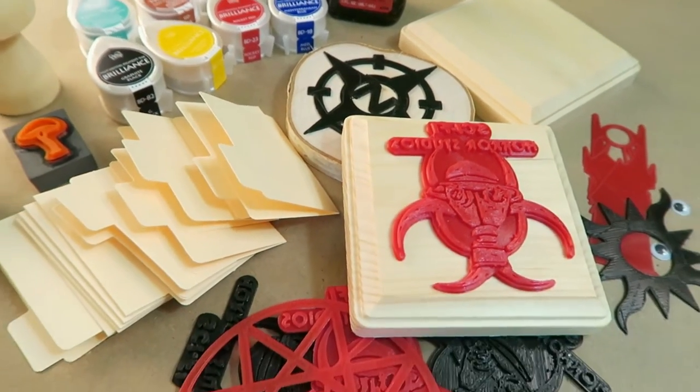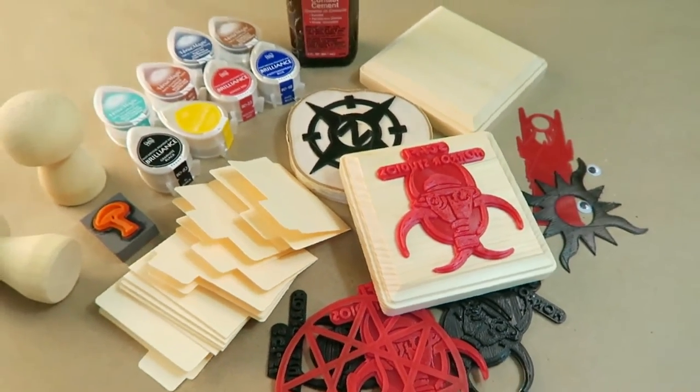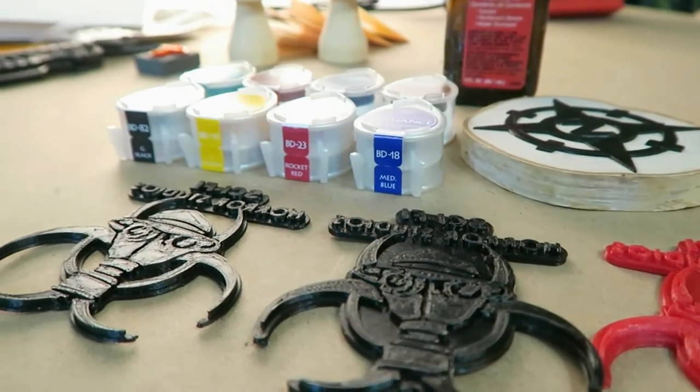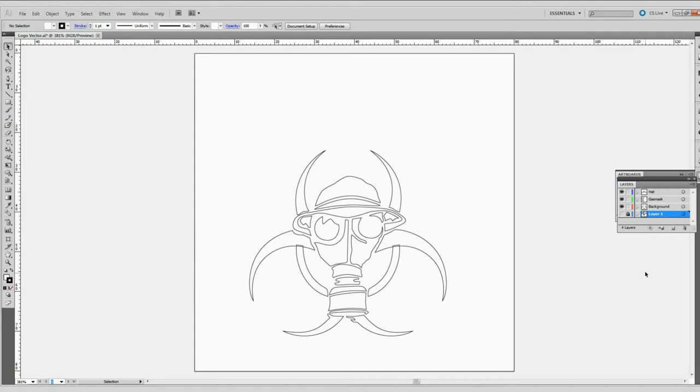I've got a variety of supplies gathered together for this project, including a few different versions of the 3D printed logo, plus the wood block that we'll be using for the backing. This was pre-purchased with the nice edge already routered into it.